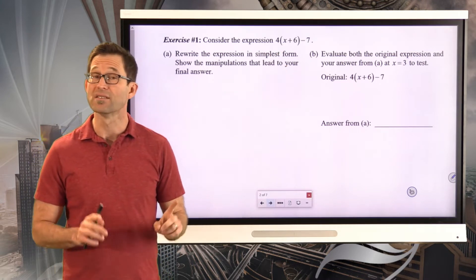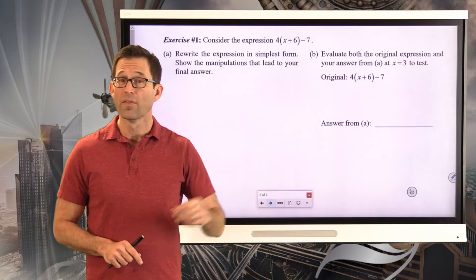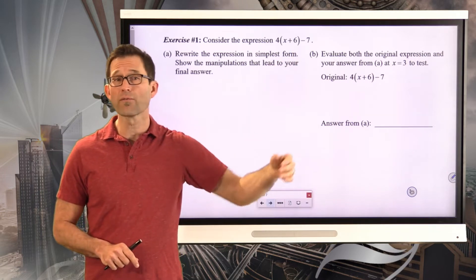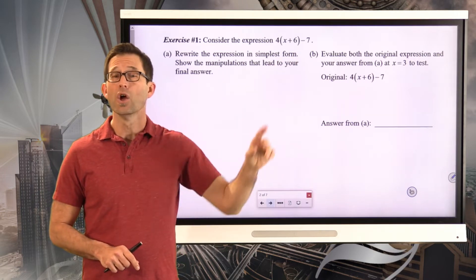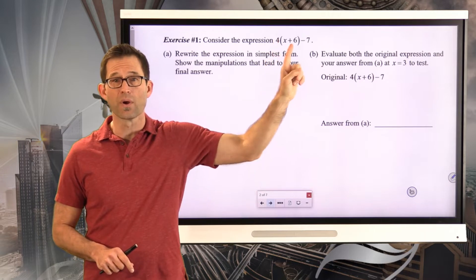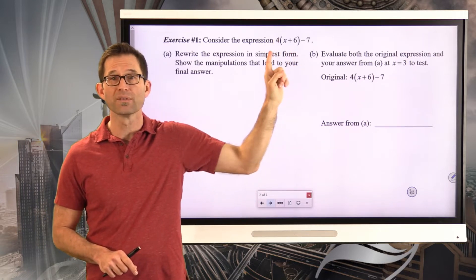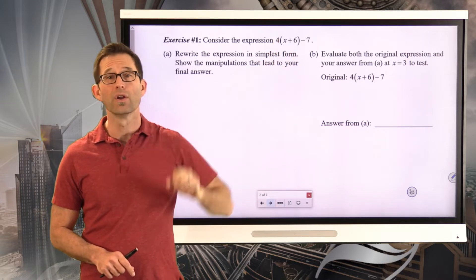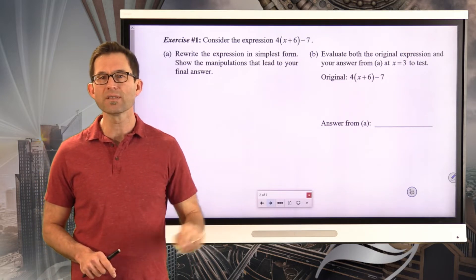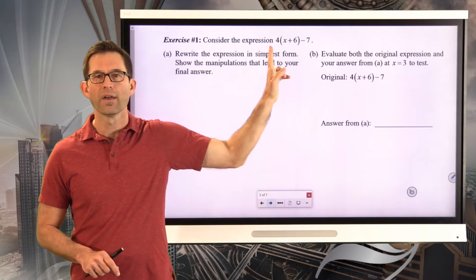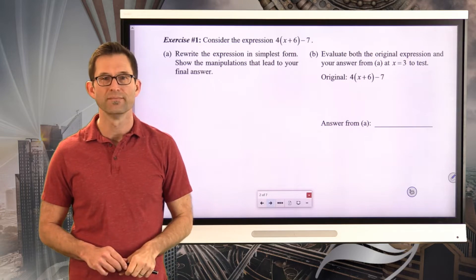Please note this is definitely not an equation — there's no equal sign, and you're not solving for x. You're just going to use the distributive property to multiply that parentheses by four, and then do a little bit of combining like terms. Pause the video now and try to write this expression in its simplest form.